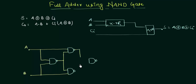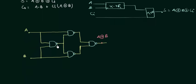The outputs of both these gates will act as the inputs to the last NAND gate. So at this point we are having A XOR B. If you want the proof of this, I have covered it in the half adder implementation and in the universal gate lecture, so refer to that. So we have got our A XOR B.